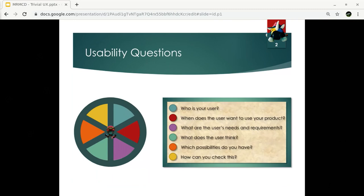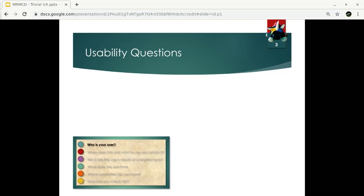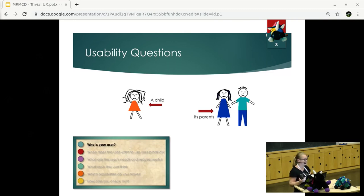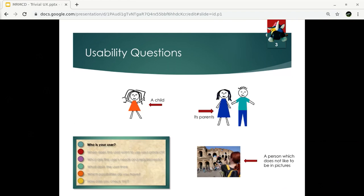So usability. For Trivial UX, we have to answer six questions to win our game. And we will go through these questions one by one in order to win the game. So first of all, there is one important question: who is your user? The more precise you are about your user, the better will be your product because you can develop the product exactly for the user which you have in mind. You can create specific user profiles, and you can check against these profiles later on. So is your user a child? Is your user the parent? Or is it just somebody who doesn't like to be in pictures? This question is really important. For this case, I will use the person which doesn't like to be in pictures. And now let's think a little bit about the user. What might this user be interested in? Do you have any ideas?